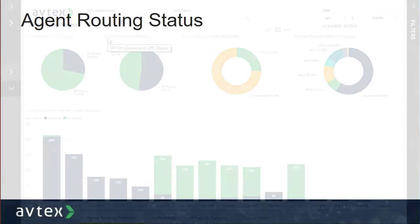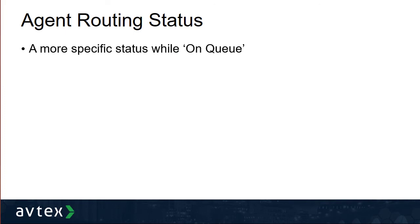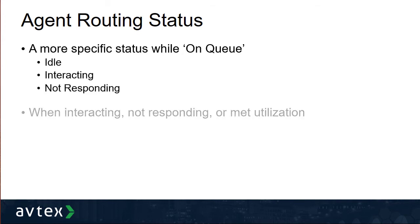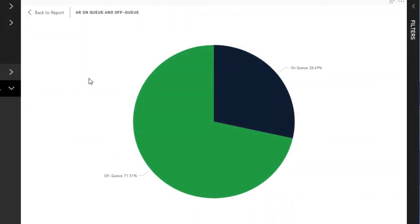To clarify what these actually mean: Agent Routing Status is the status an agent is in when they're on queue. An agent's status will change while on queue — it can go from idle to interacting and sometimes to not responding. Whenever an agent is interacting, not responding, or has met their utilization requirement, they are no longer on queue. So the on-queue metric gives you an idea of how much overall time while on queue is spent idle.